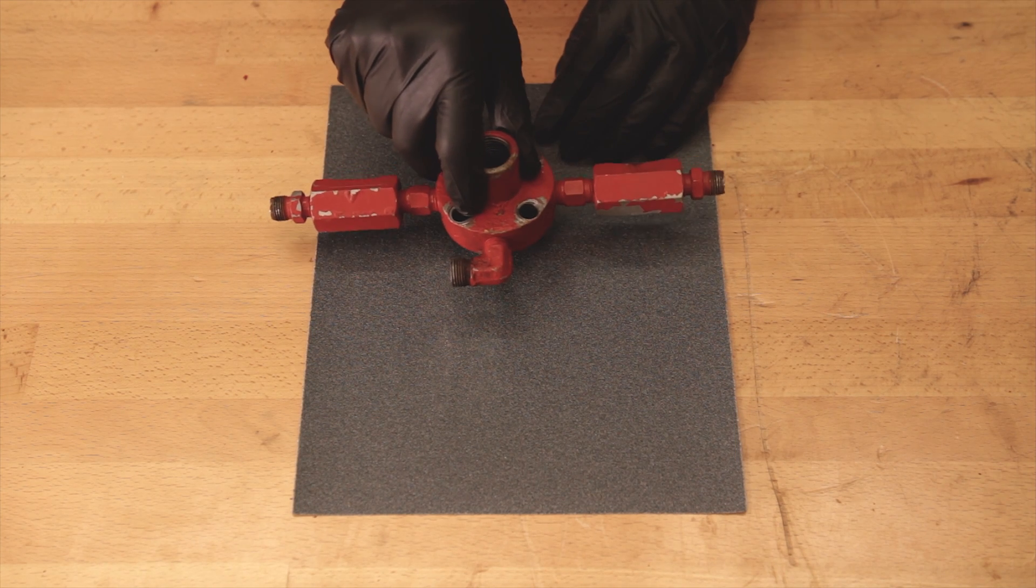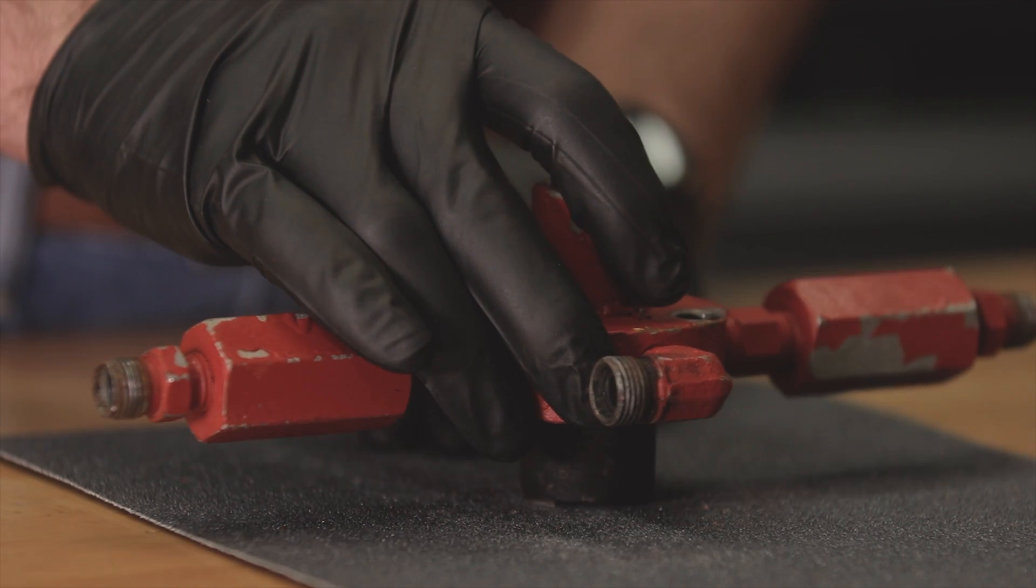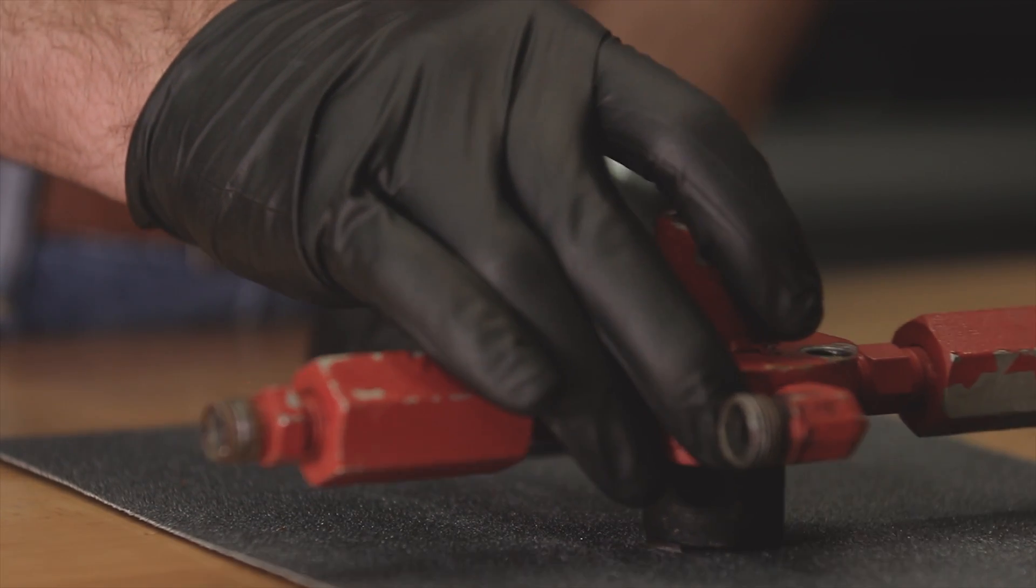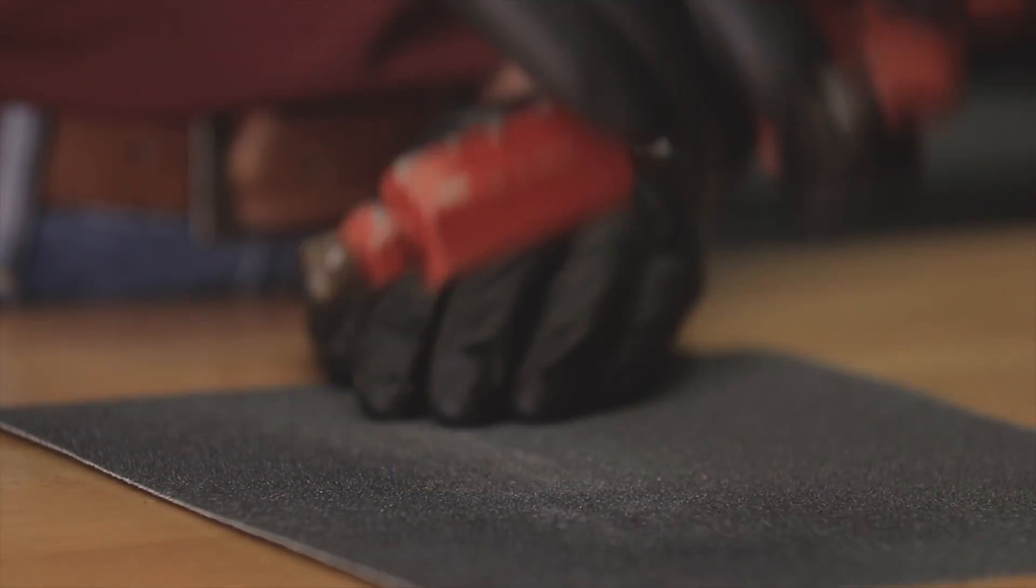Rotate the piston housing 90 degrees, lightly press, and sand one more time. This will show if there are any more deep scratches to be sanded.